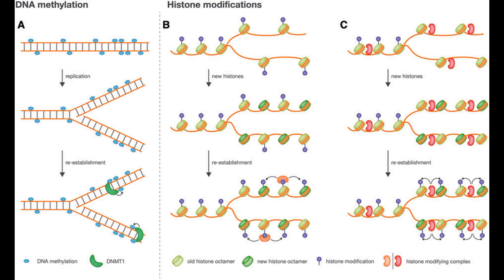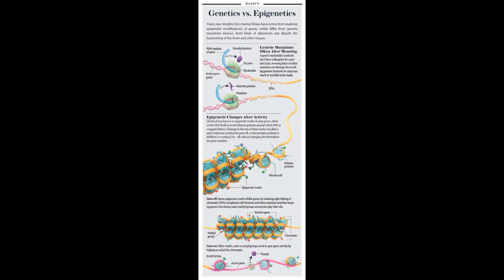And the same is also true for histone modification. These patterns are preserved and are passed on after cell division. Thus, these are examples of inheritance that don't involve the sequence of base pairs, which is called epigenetic inheritance. Epigenetics is a topic that will get a video all for itself.